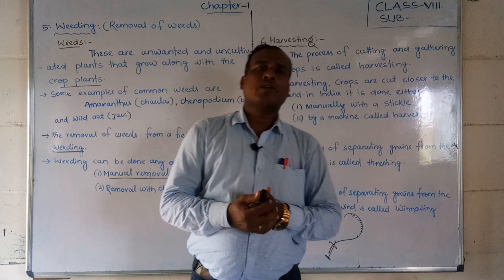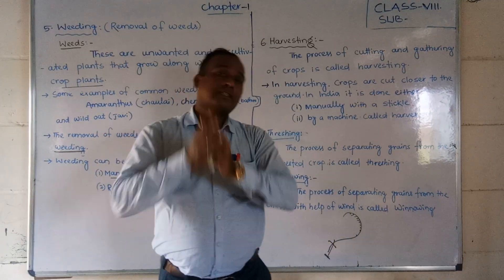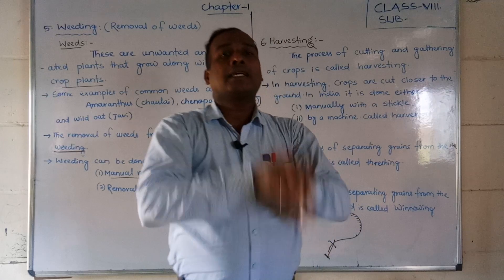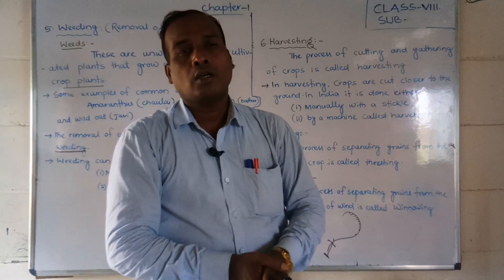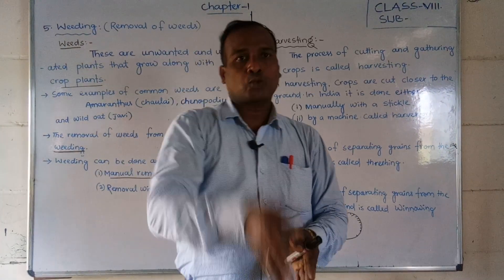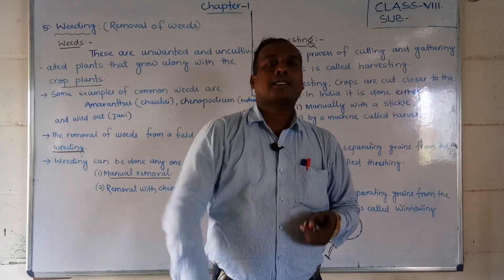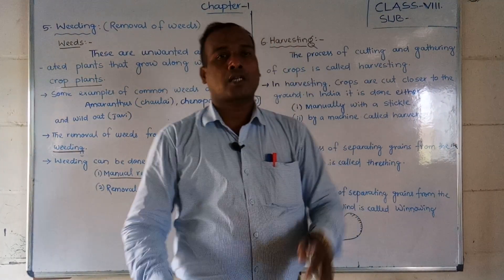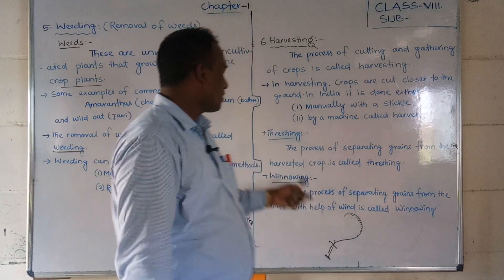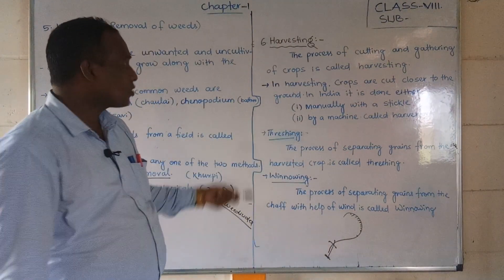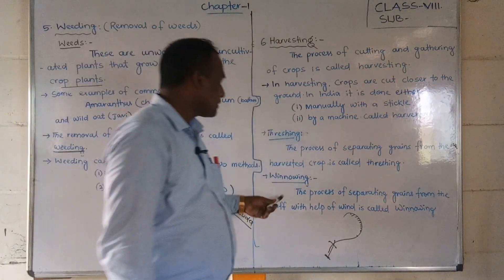Machinery is available nowadays for threshing. In olden days, farmers would beat the crops against a stone to collect the grains. That process is called threshing.